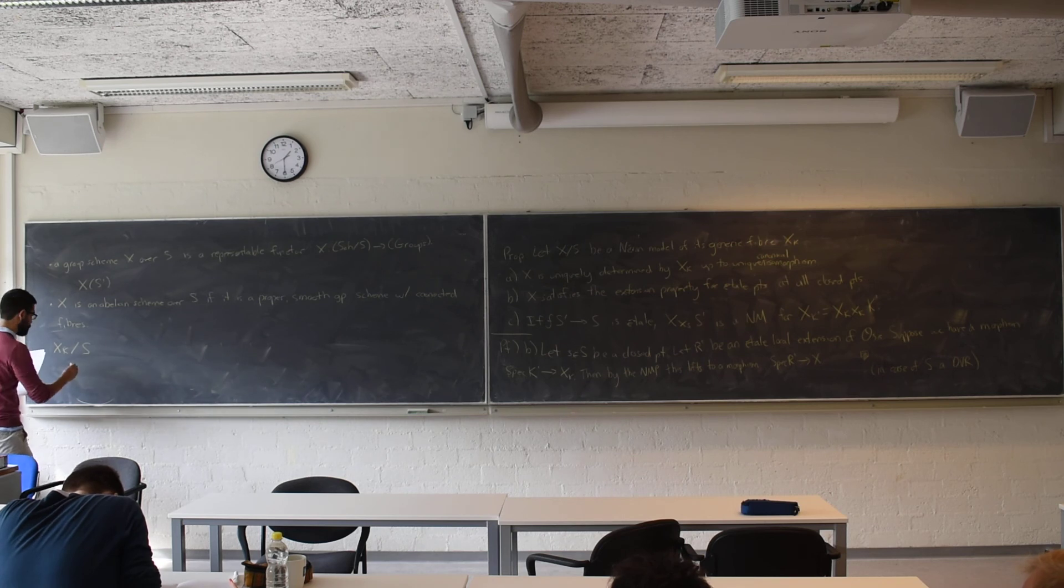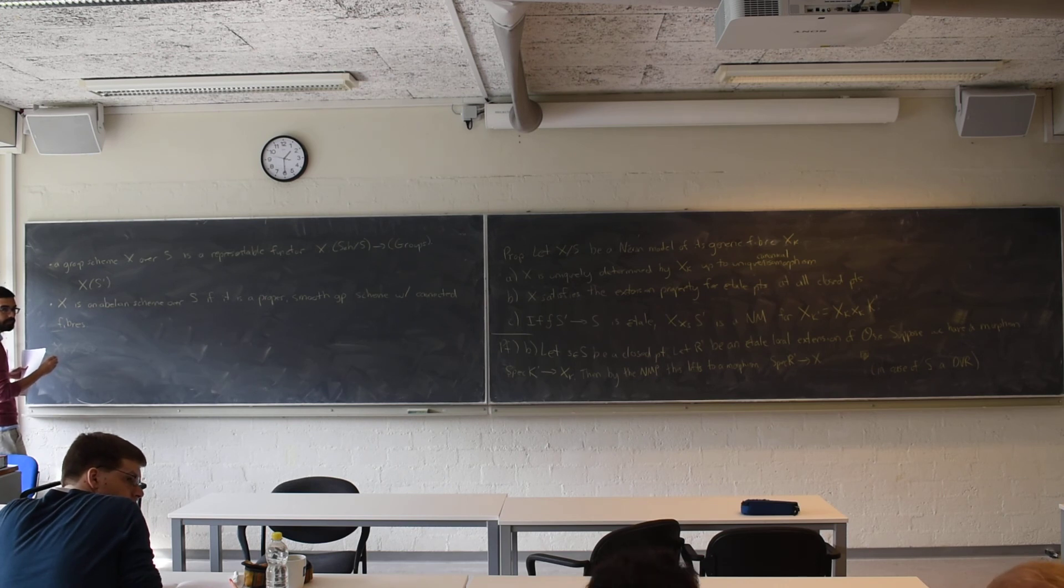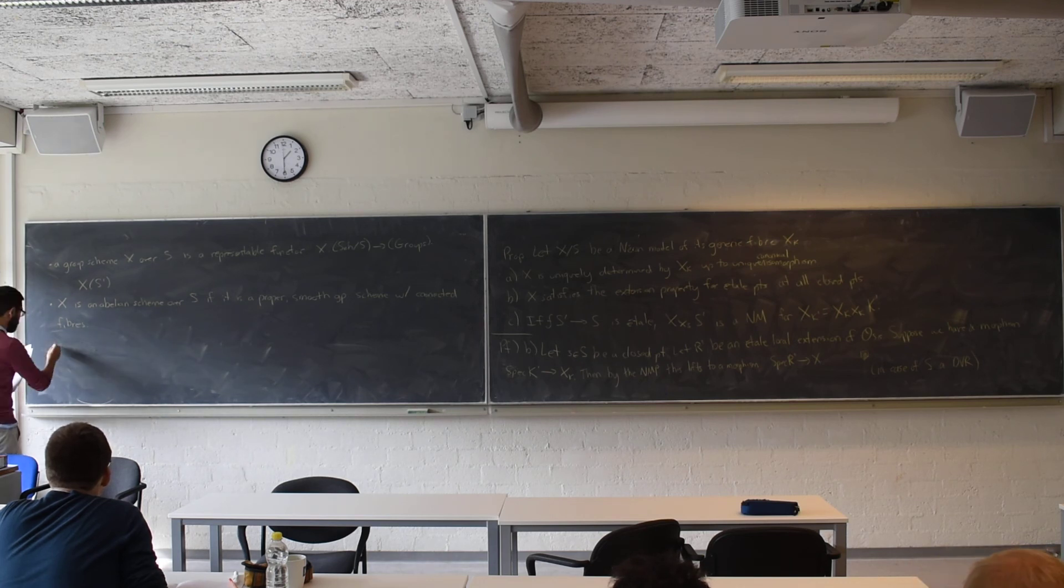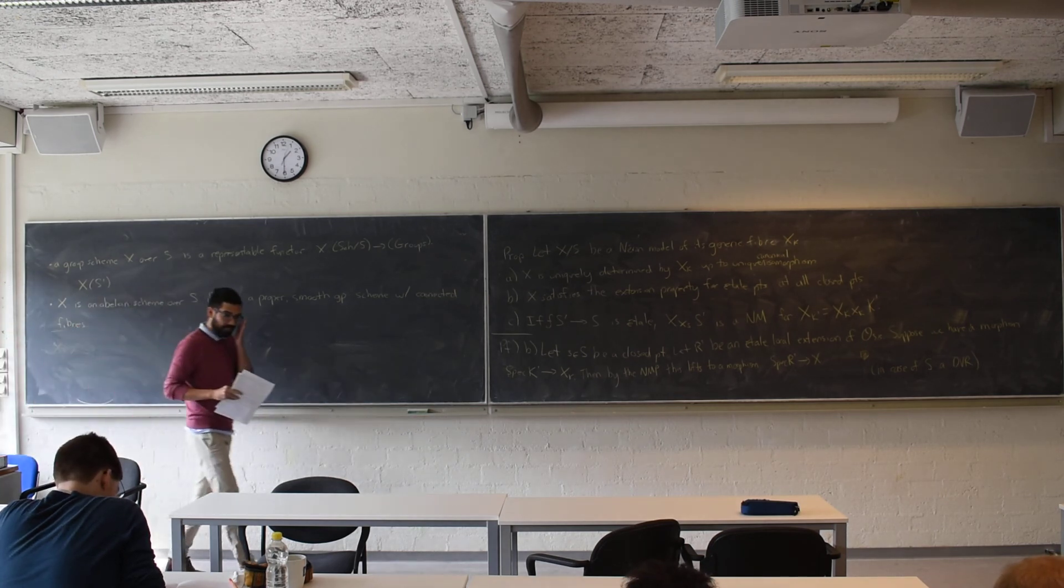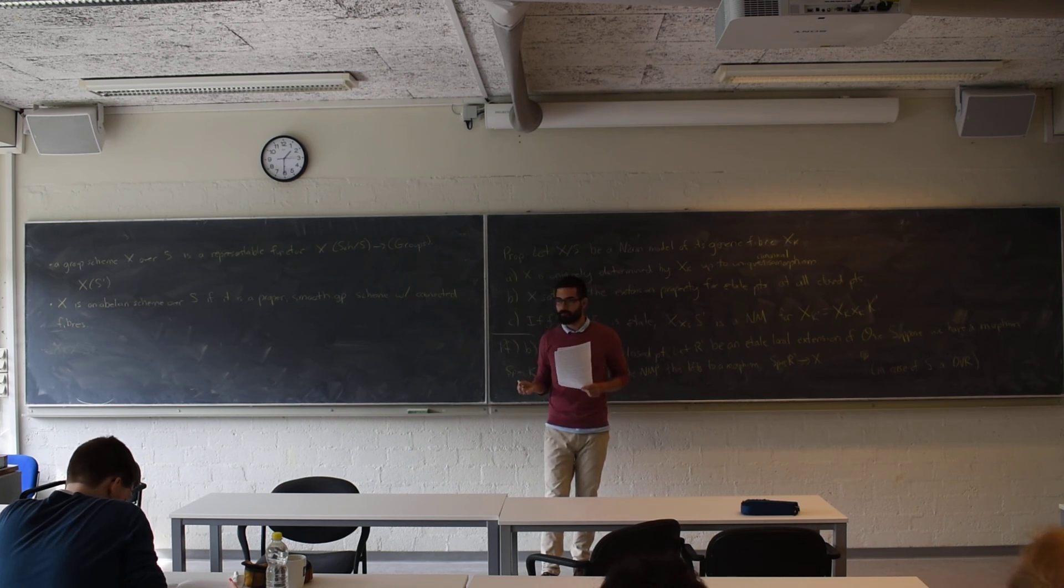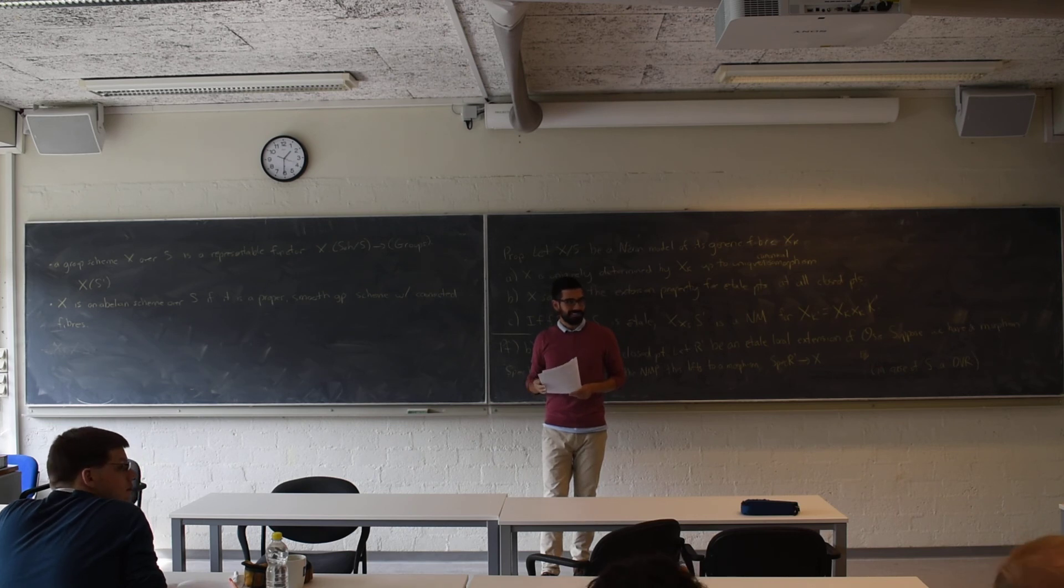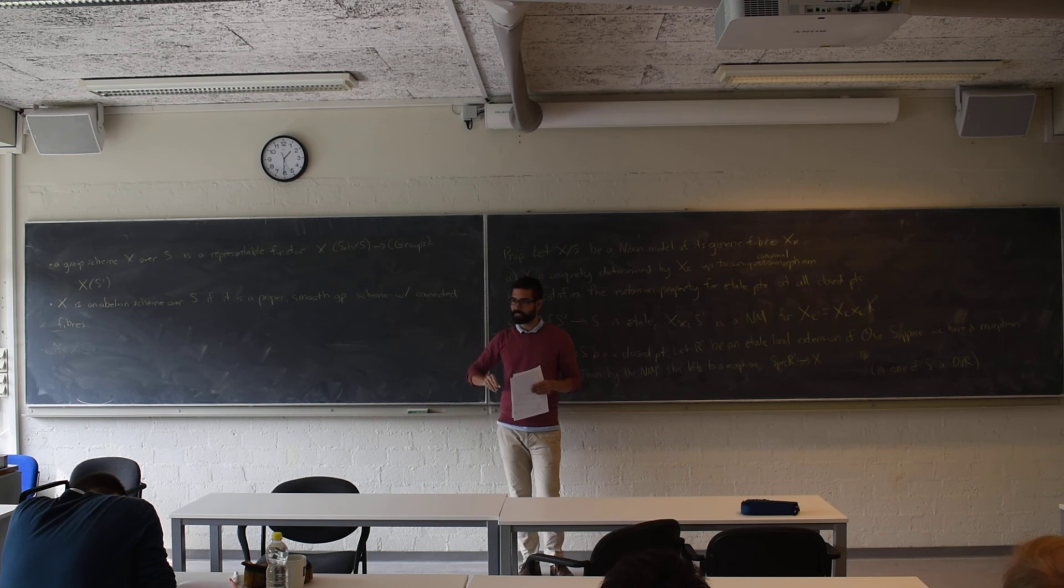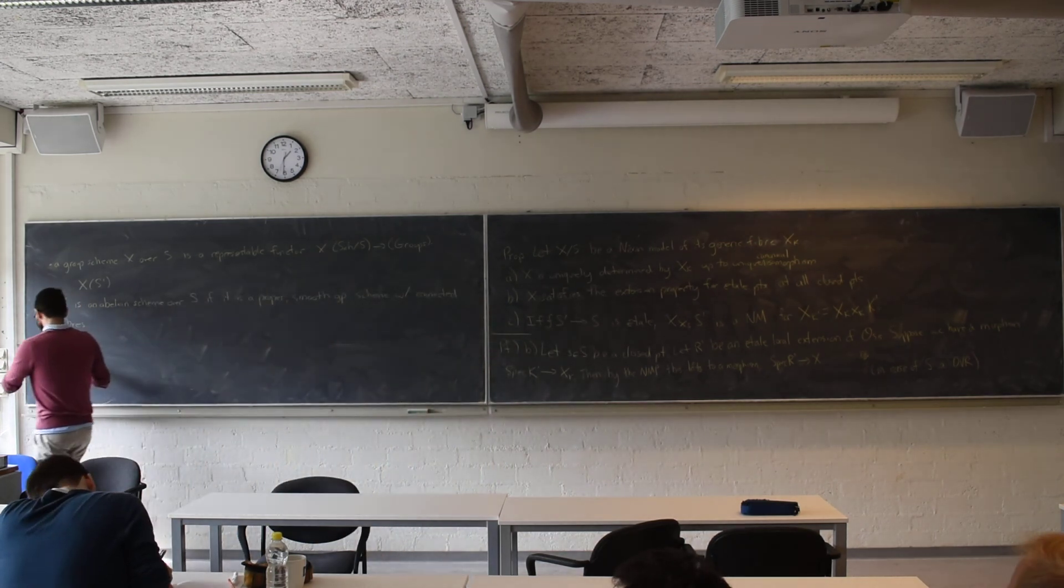Therefore, X is an abelian scheme over S if it is a proper smooth group scheme with connected fibers. Now why is this important? It turns out that if we start with X_K over S an abelian variety, then the existence of Neron models in this case is very nice. So abelian schemes in general are very natural for studying Neron models.